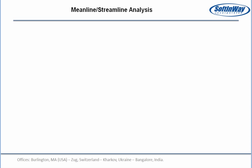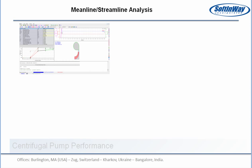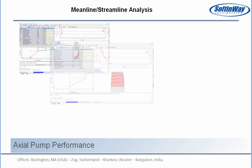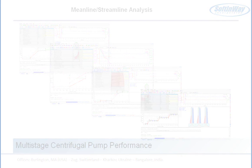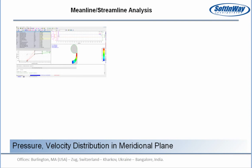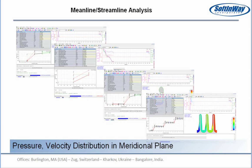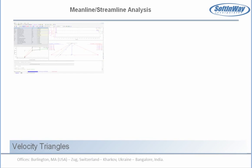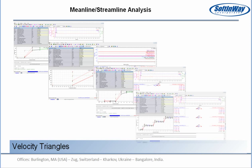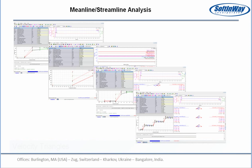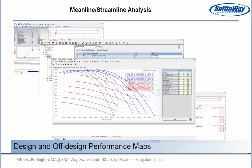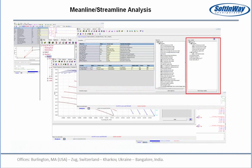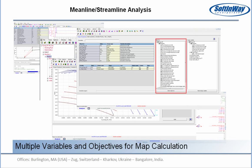Next, we focus on meanline and streamline analysis. The performance of each type of pump — such as mass flow rate, efficiency, flow head, pressure, velocity distribution, and velocity triangles — are calculated by the meanline and streamline analysis. Cavitation parameters are also taken into account. Design and off-design performance maps can be calculated, and you can also study the effects of multiple variables on different objectives.